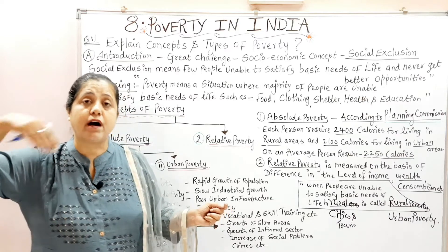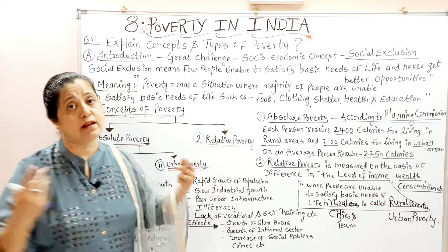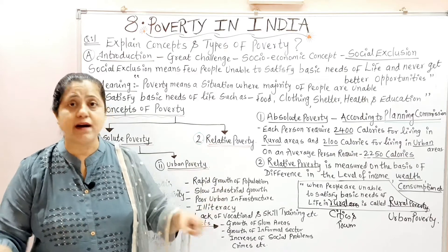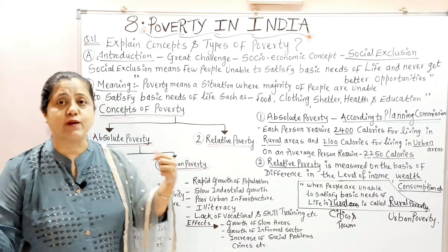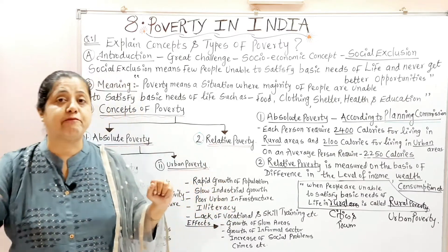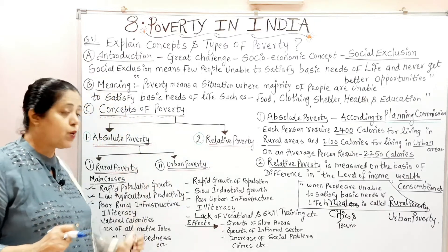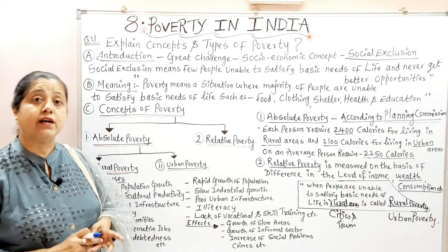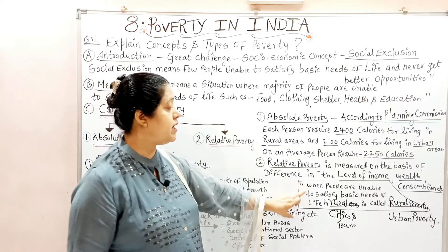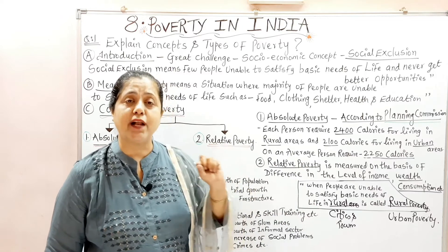Their grandfather's or father's taken loan is paid back by their children and grandchildren — they get trapped in a vicious circle of poverty. So that is rural poverty — when the people are unable to satisfy basic needs of life in rural areas, it is known as rural poverty.